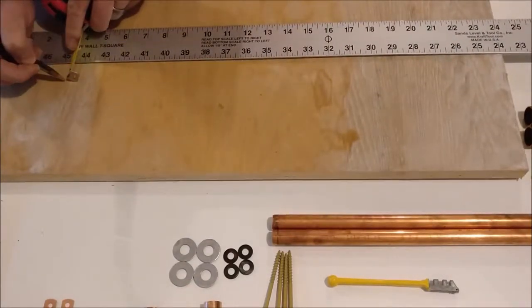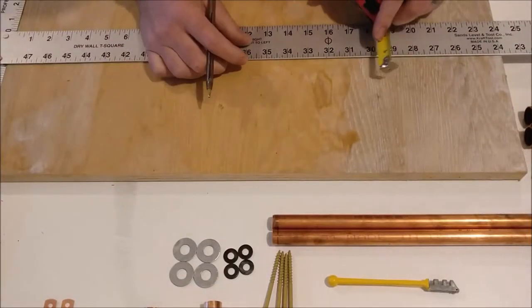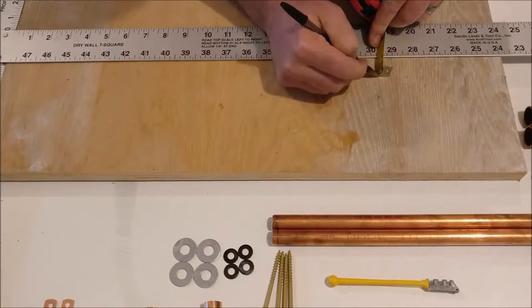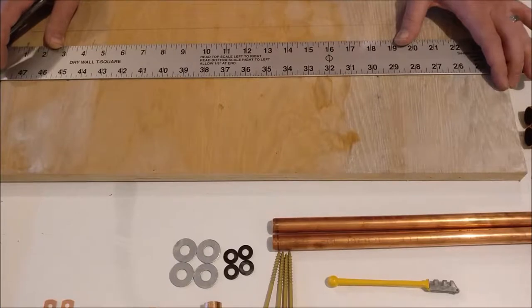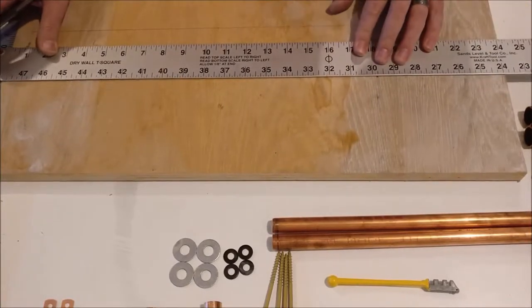So the first thing we're going to do is measure lines on a piece of plywood that are three inches apart. That will be where the two copper pipes go that the bottle is going to sit on.